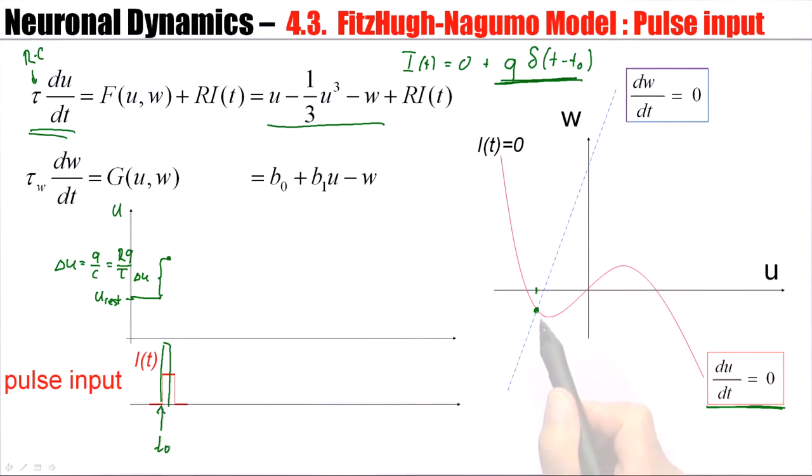In the phase plane, which I have drawn here on the right-hand side, a jump in the voltage means that the value of w, this was w rest, the value of w does not change, but the voltage jumps to a new value, say, to a new point here. So the pulse input acts like a jump in the voltage while w remains unchanged.